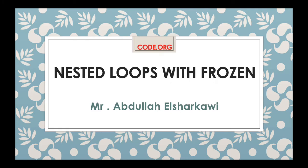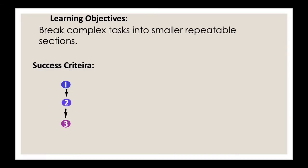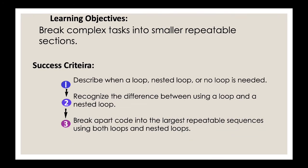Good morning students. Today we have a new lesson with code.org: lesson 12, nested loops with Frozen. Our objective is to break complex tasks into smaller repeatable sections. The success criteria include: describing when a loop, nested loop, or no loop is needed; recognizing the difference between a loop and a nested loop; and breaking code into the largest repeatable sequences using both loops and nested loops.